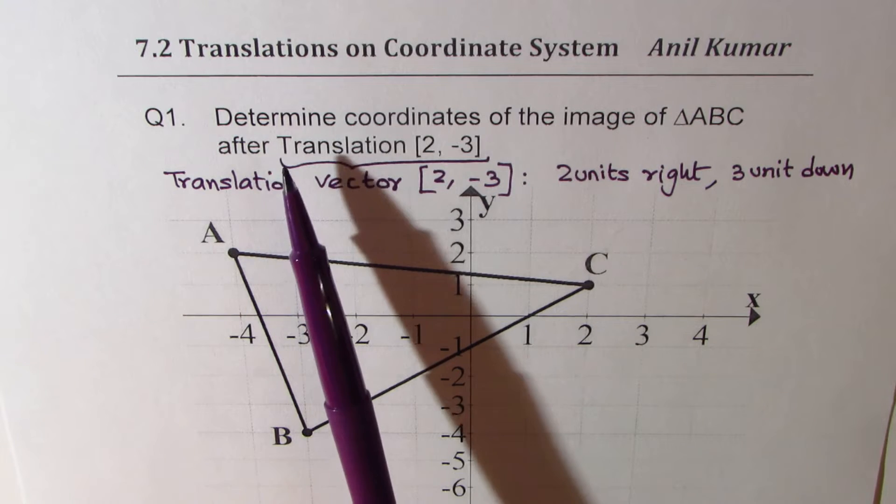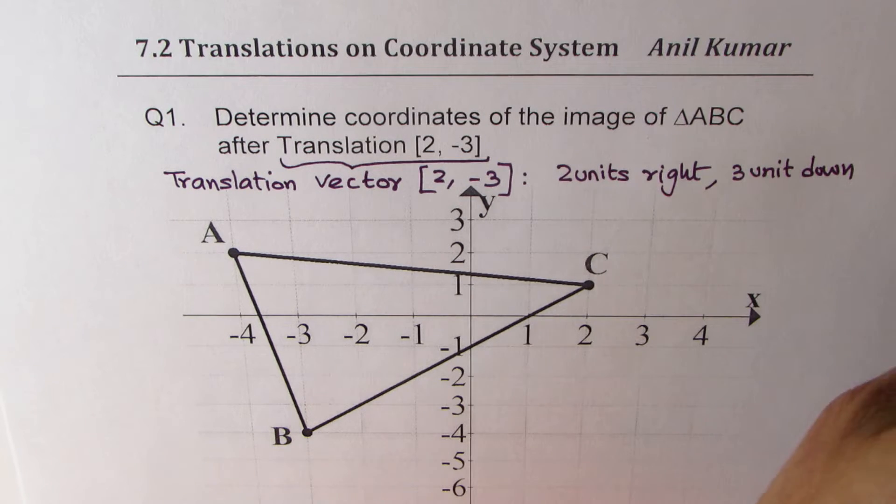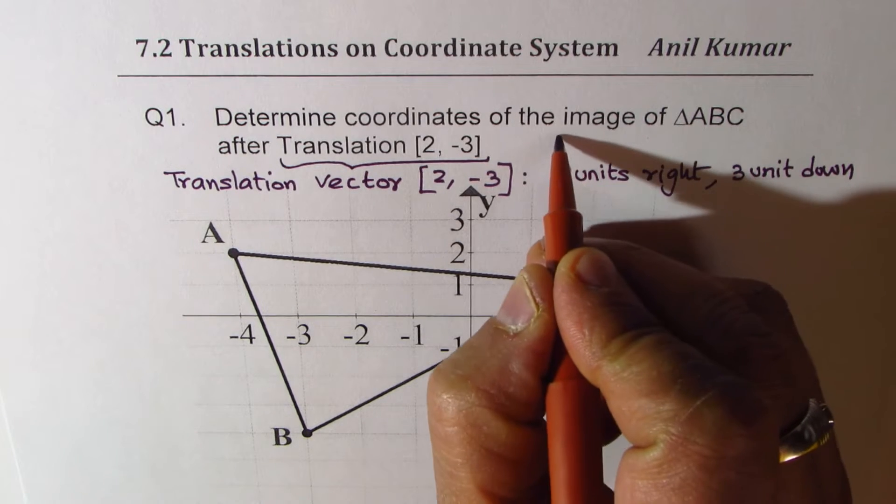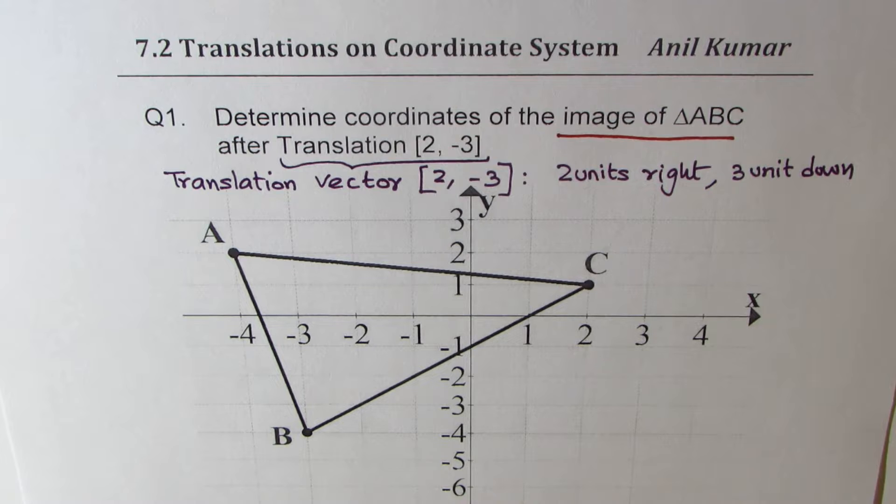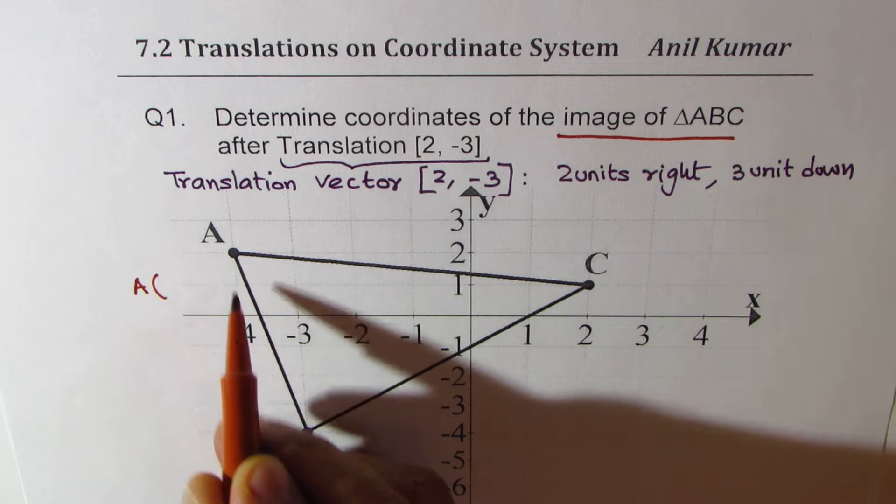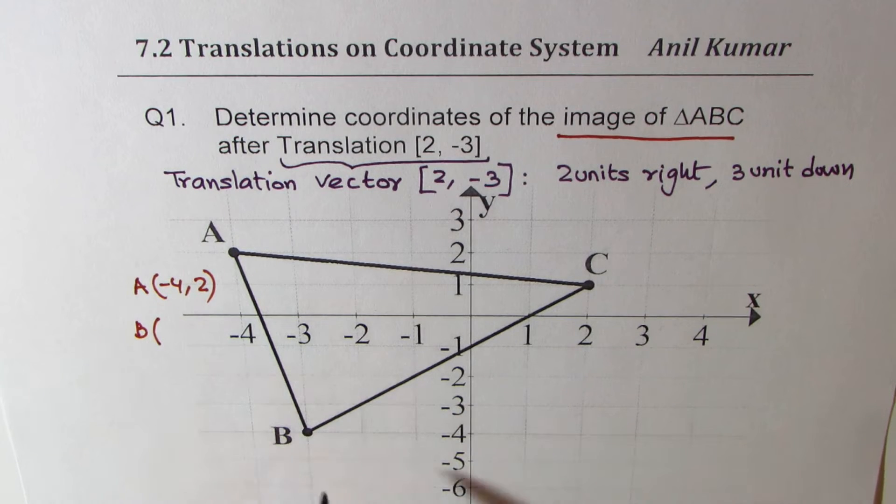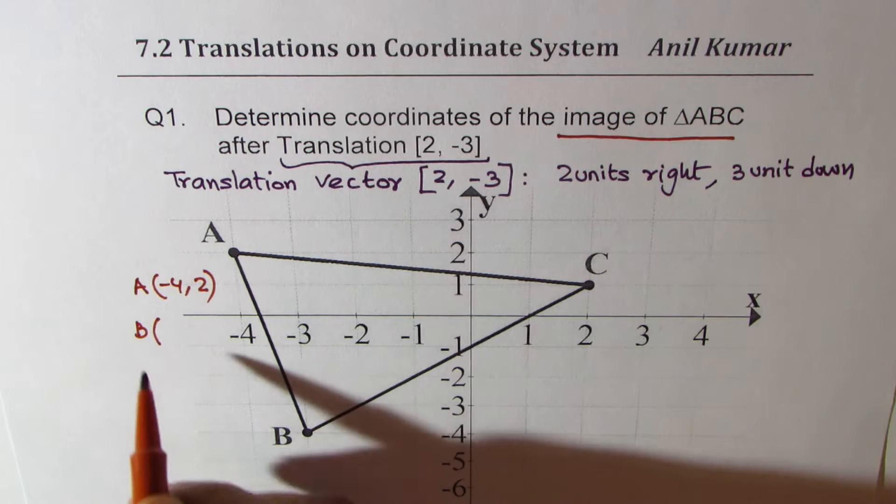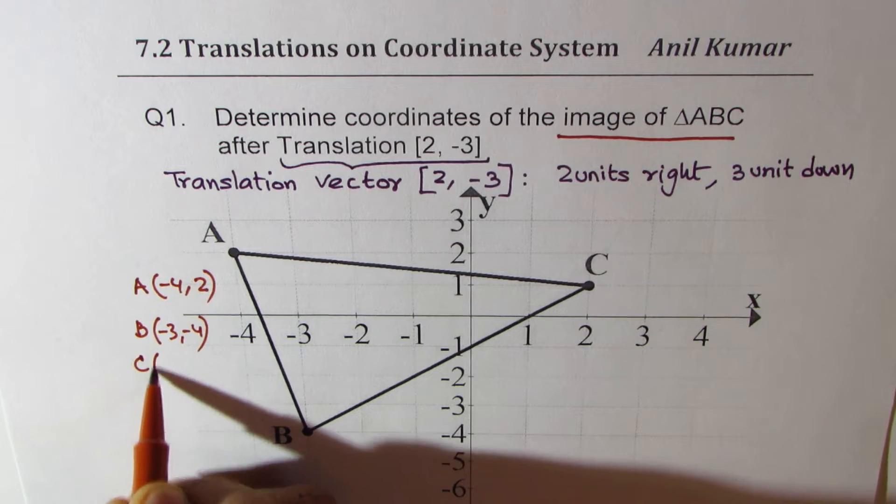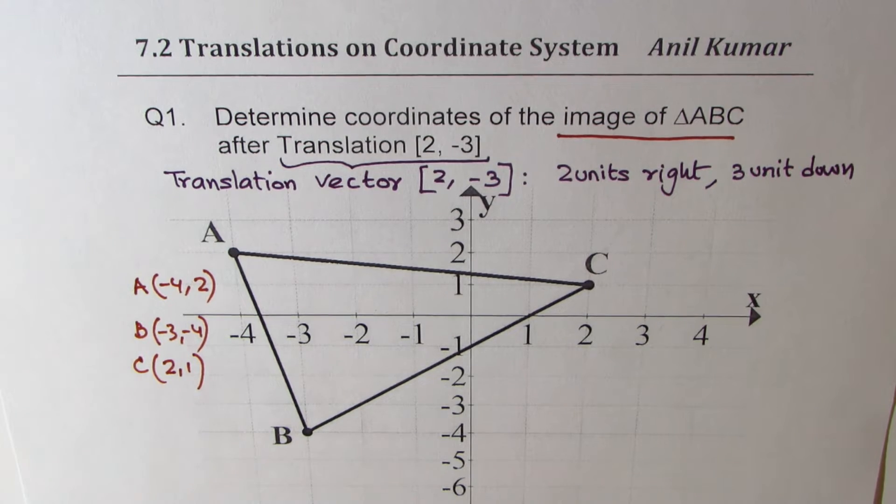Now let's get back to question one. Determine coordinates of the image of triangle ABC. Now another term which you see here is image. So we are saying image of ABC. Now what it really means is that first you write down the coordinates for points A, B, and C. So A is (-4, 2), B is (-3, -4), and C is (2, 1). So these are the coordinate points of triangle ABC.